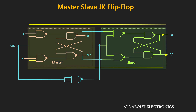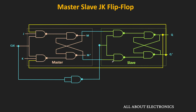The circuit consists of two NAND gate-based SR latches. One latch acts as a master latch while the second latch acts as a slave latch. Once we discuss the working of the circuit, it will become clear why these latches are called master latch and slave latch. The J input is applied in place of the S input, while the K input is applied in place of the R input. The output of the master latch is connected to the slave latch.